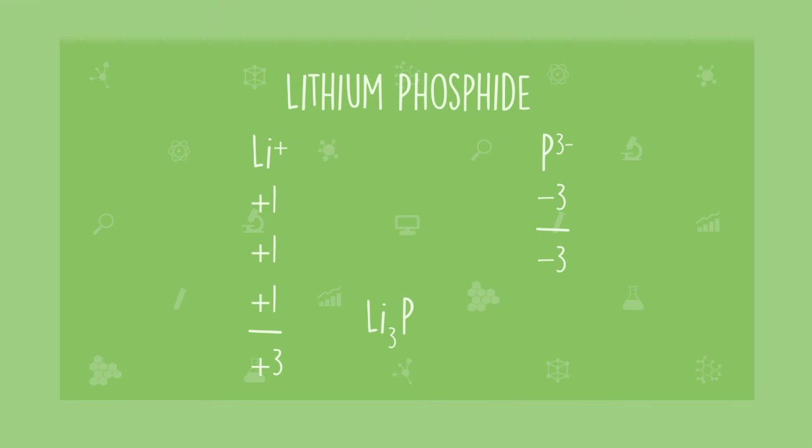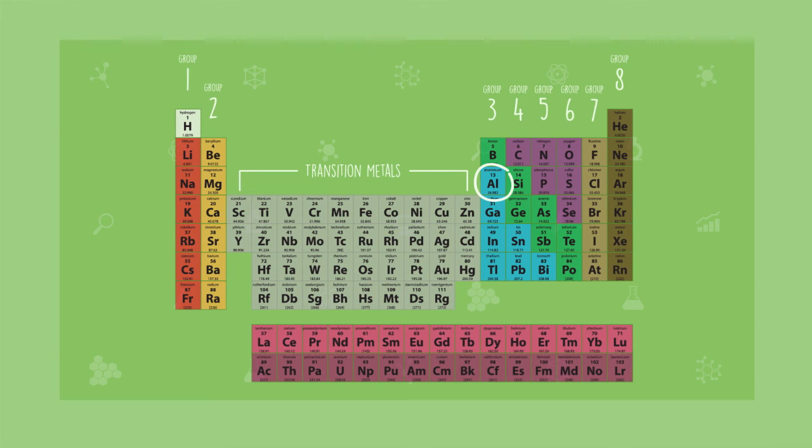Let's use this same method to work out the formula for aluminum oxide. Aluminum is in group three, so it forms a cation with a charge of plus three. And oxygen is in group six, so it forms an anion with a charge of minus two. Now this looks a little trickier because two doesn't go neatly into three. So how many positive aluminum ions do we need to balance out the negative oxygen ions?